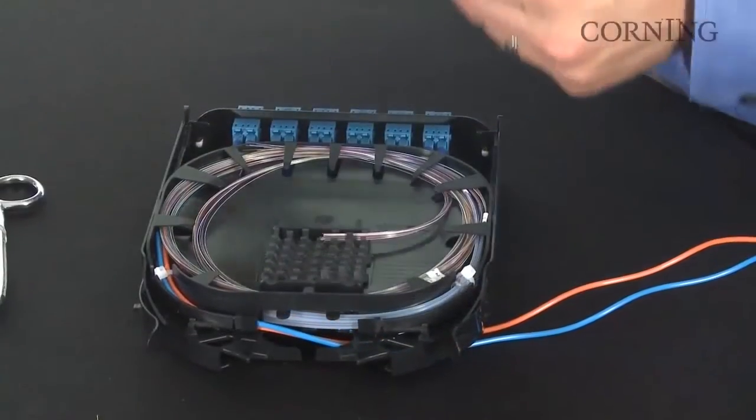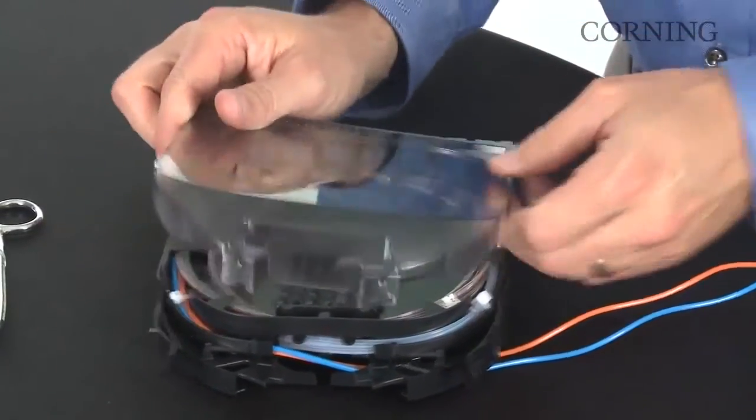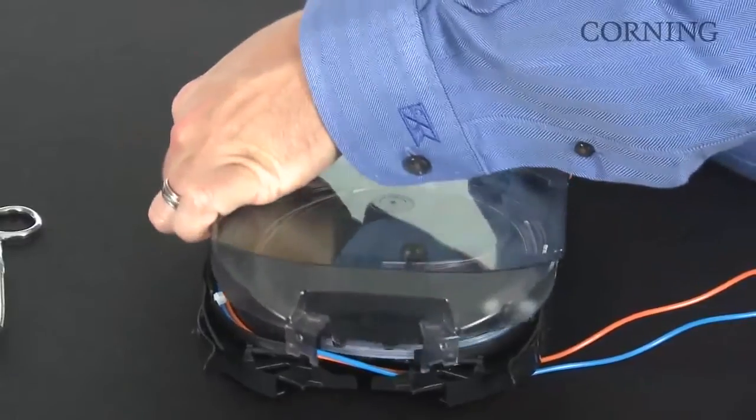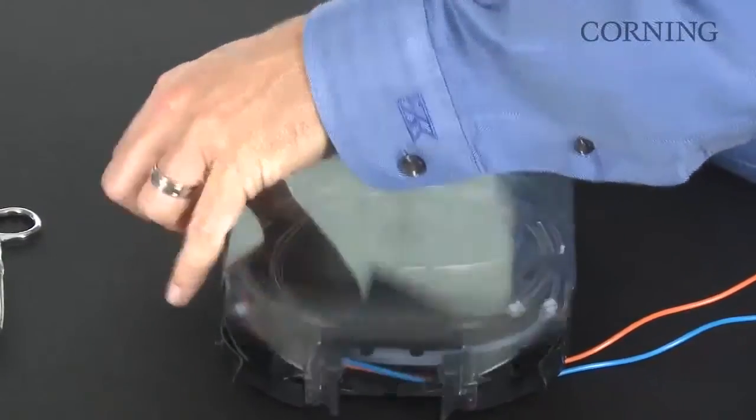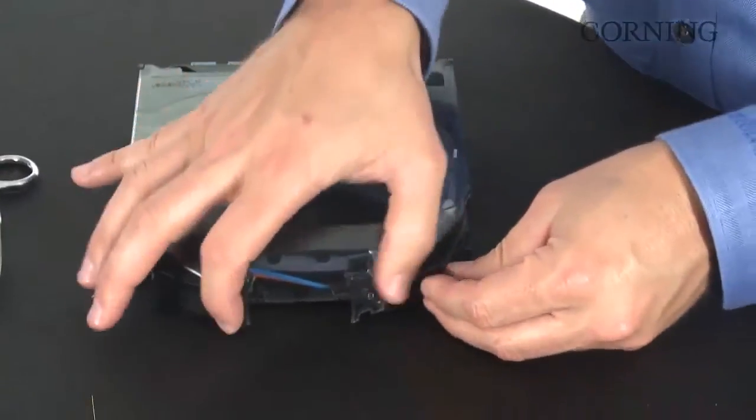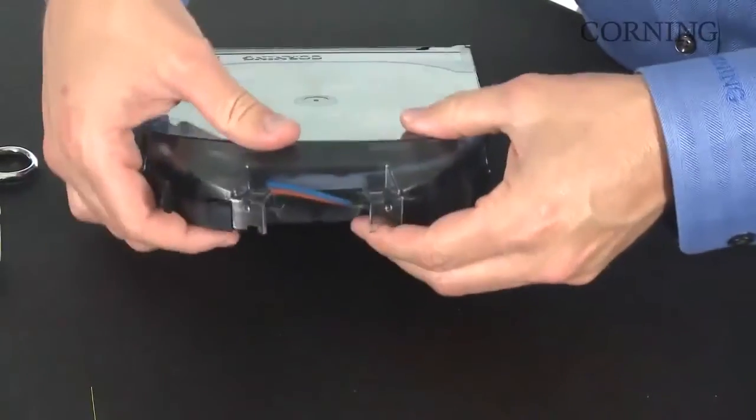Once the fiber has been routed and cut to length, place the Lexan cover back into its original position by applying a slight bend. The cover should be able to open and close freely without any hesitation.